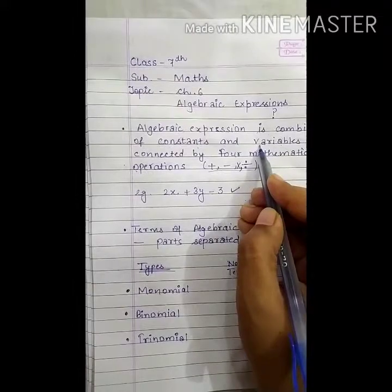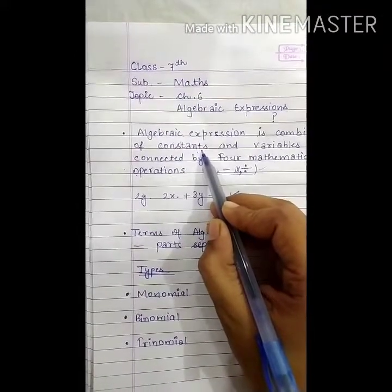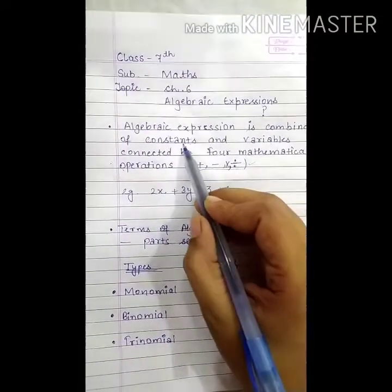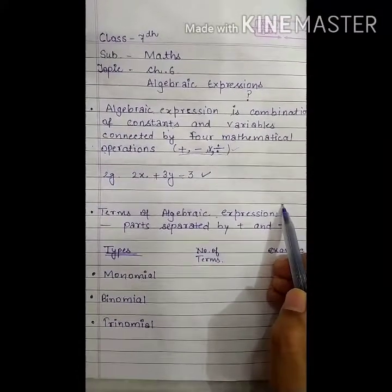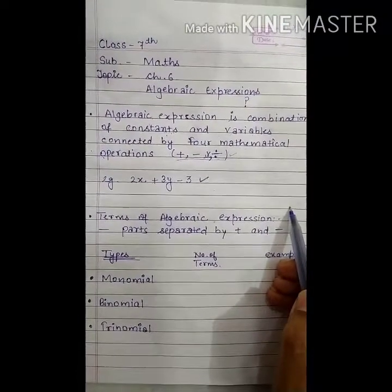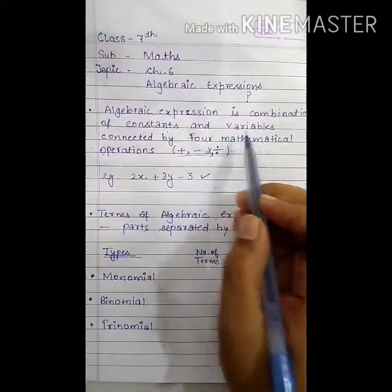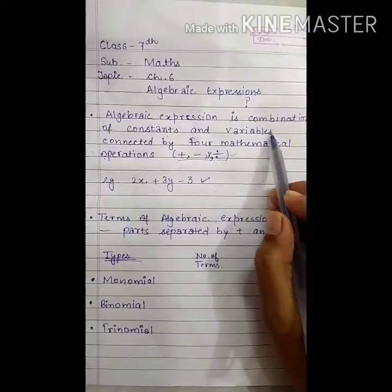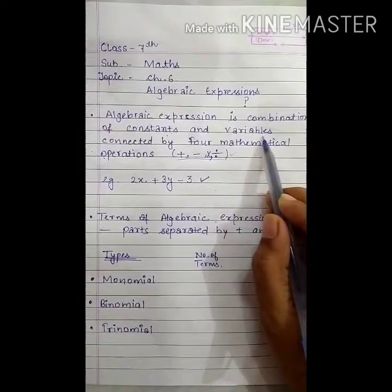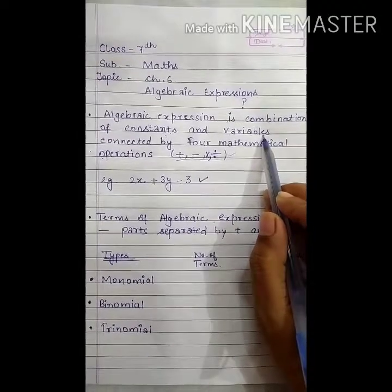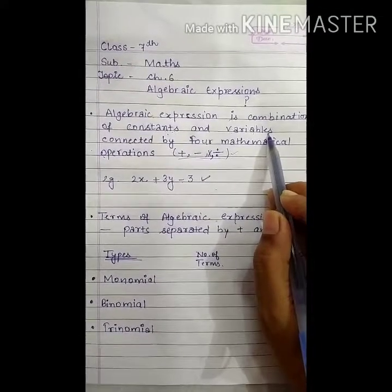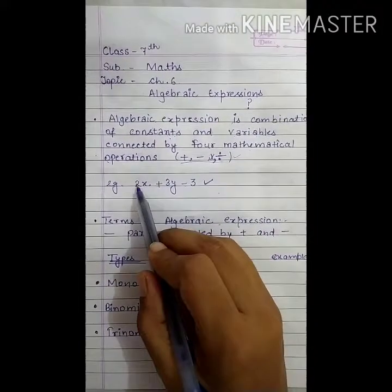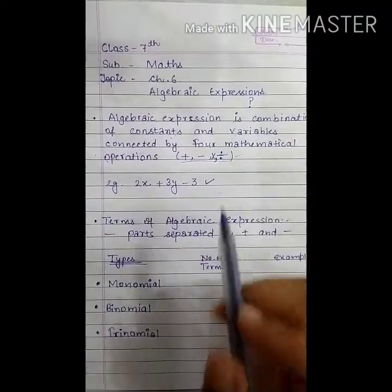You know about constants and variables? Constant is a quantity which does not change and remains same. For example, number of days in the month of September. It equals 30. Fixed hain. So, this is constant. And temperature of a day. You know temperature does not remain same. Wo same nahi rahata. So, it is a variable quantity. And we represent variables by small alphabetical letters. See, here x and y are variables. Two, three are constants.